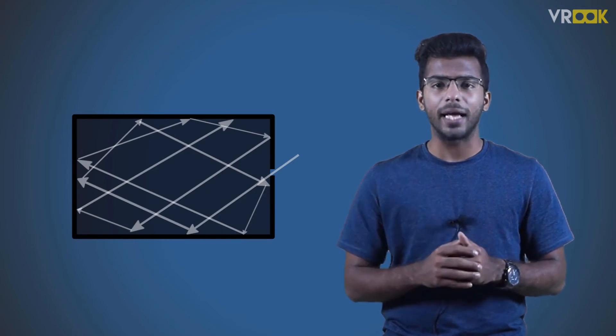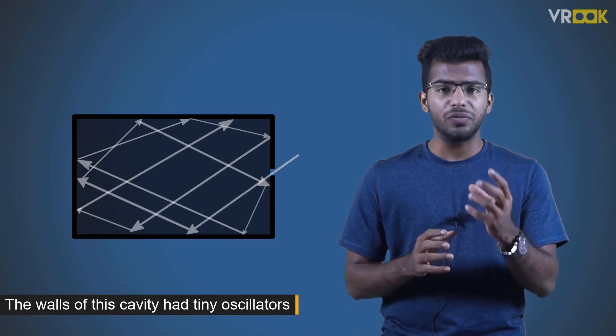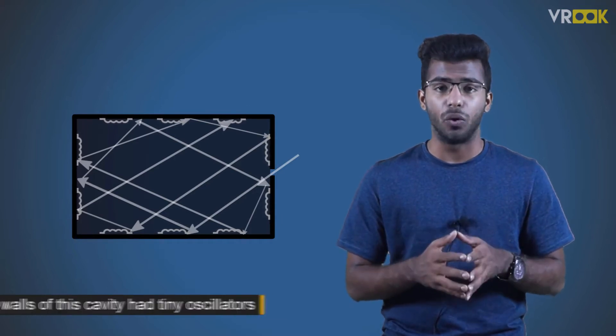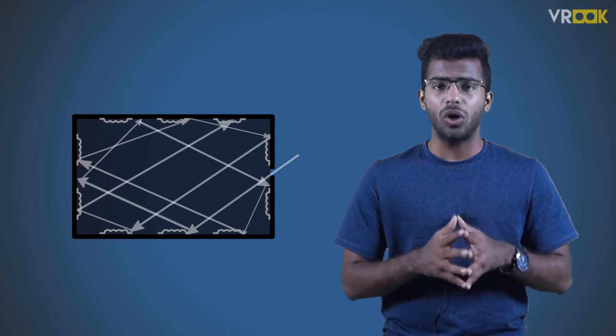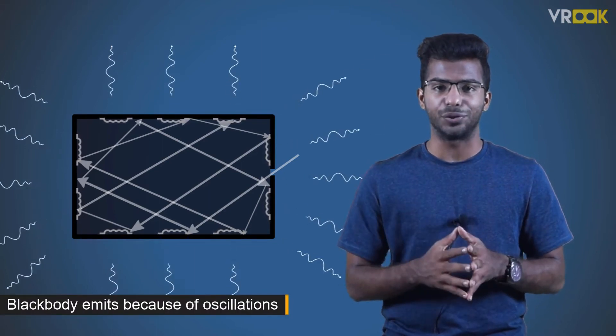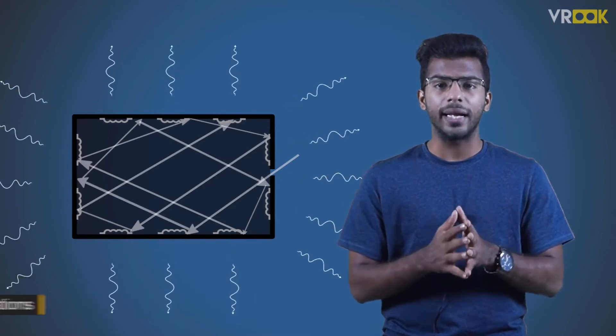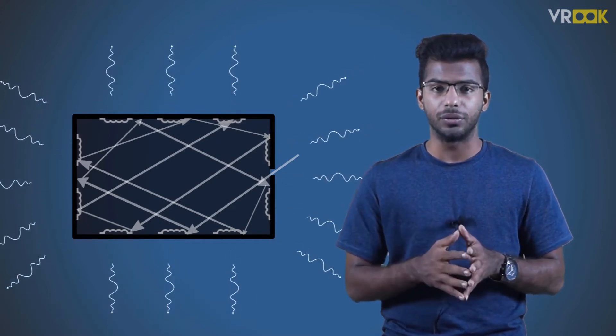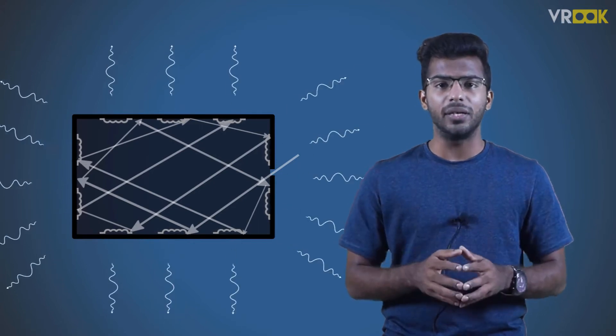Max Planck proposed that the walls of this cavity had tiny oscillators which oscillate back and forth. It is because of these oscillations the blackbody is able to emit radiations. As they oscillate, they produce heat and that comes out as radiation.